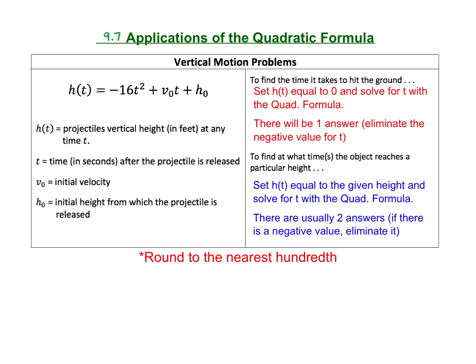The last question on the Unit 9 test review comes from Lesson 9.7 on Applications of the Quadratic Formula. For this lesson, we focused on vertical motion problems, and the general equation for vertical motion problems is h(t) equals negative 16t squared plus v sub 0 t plus h sub 0.